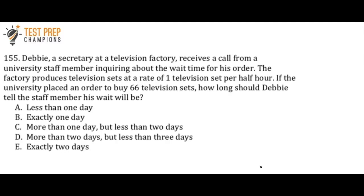Debbie, a secretary at a television factory, receives a call from a university staff member inquiring about the wait time for his order. The factory produces television sets at a rate of one television set per half hour. If the university placed an order to buy 66 television sets, how long should Debbie tell the staff member his wait will be? A: less than one day, B: exactly one day, C: more than one day but less than two days, D: more than two days but less than three days, or E: exactly two days.